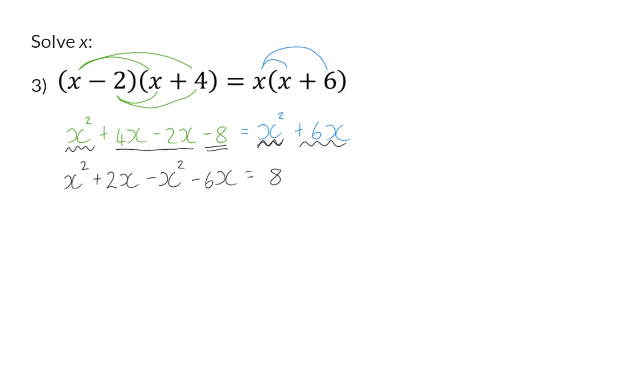Next, I can add up all the like terms, and I have 1x squared minus x squared, which will give me 0x squared. So now we're only left with the x's.